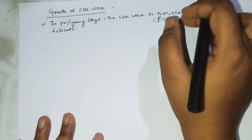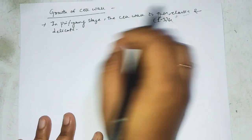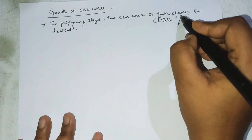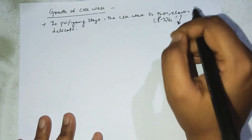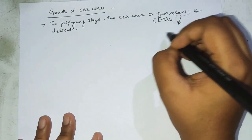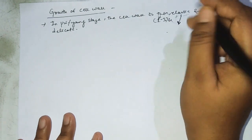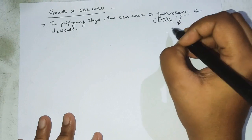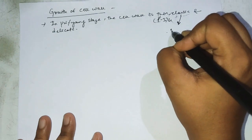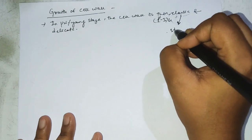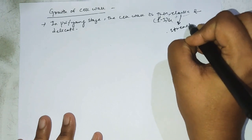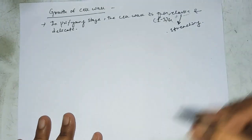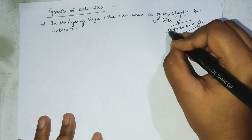The elastic nature of the cell wall in the primary stage is due to water. Due to this elasticity, the cell starts to grow, and the wall of the cell undergoes stretching due to its elastic nature.